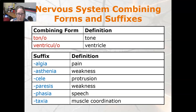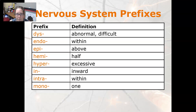For the prefixes: dis is abnormal or difficult, endo is within, epi is above, hemi is half, hyper is excessive, in is inward, and intra is within, mono is one.